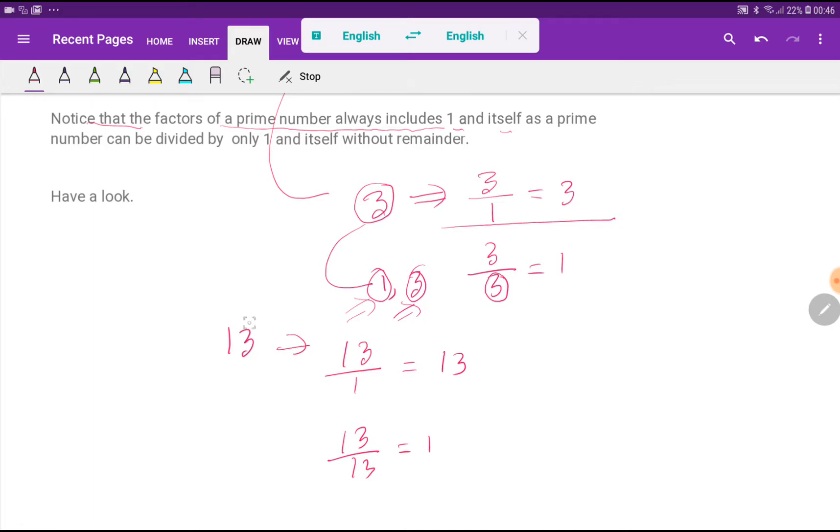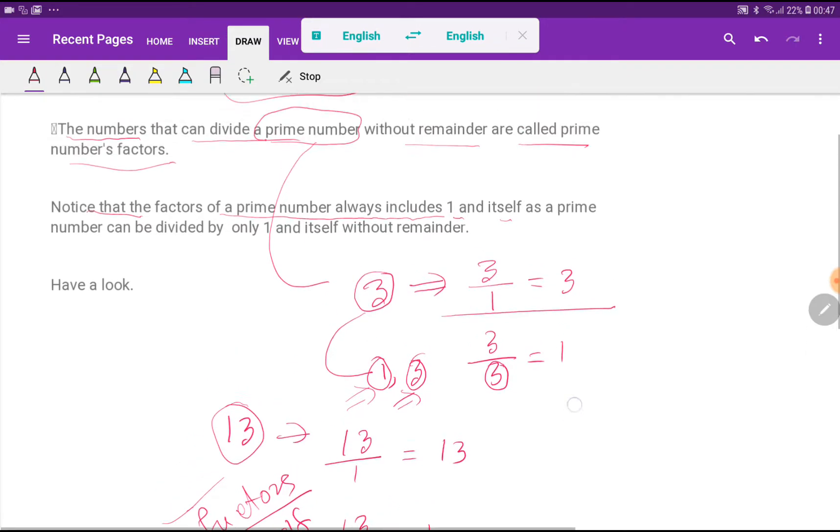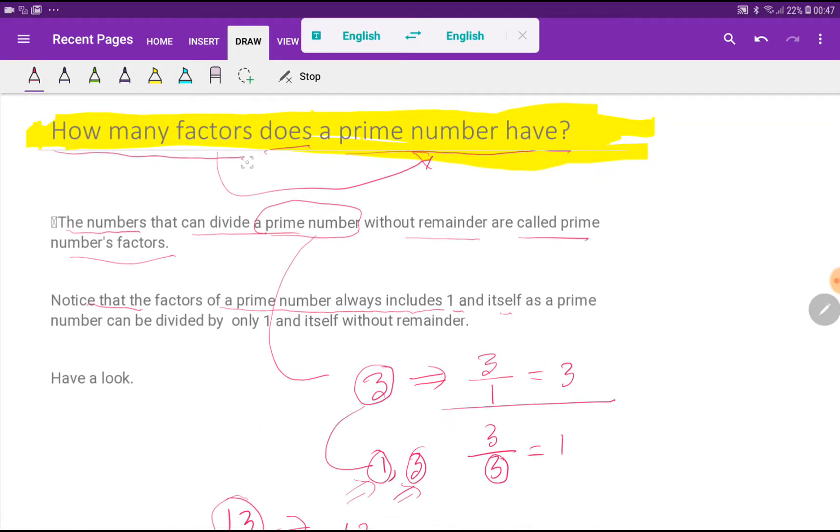That is, every prime number will have two factors - the first one is 1 and the second one is itself. So how many factors does a prime number have? A prime number has two factors.